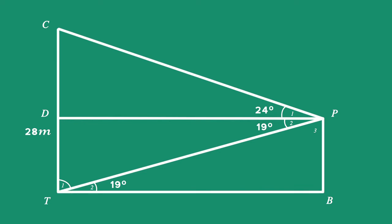The building Lebo is standing on is perpendicular to the ground, hence angle B is 90 degrees.